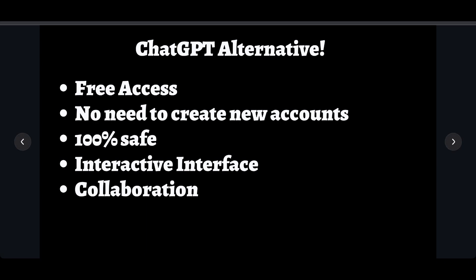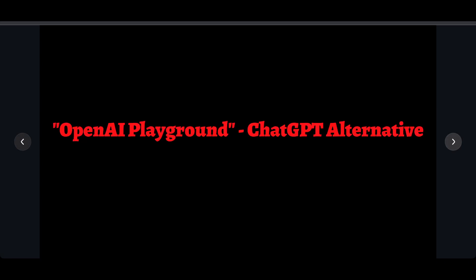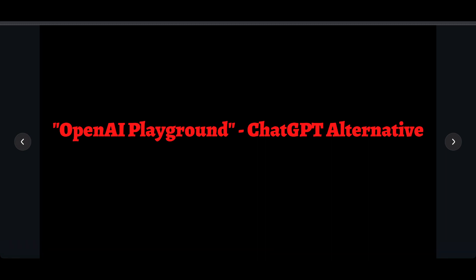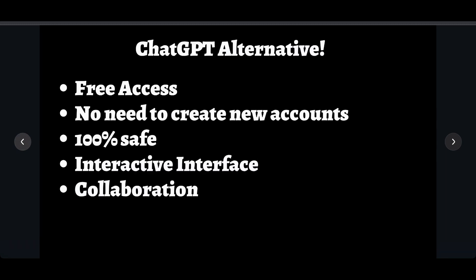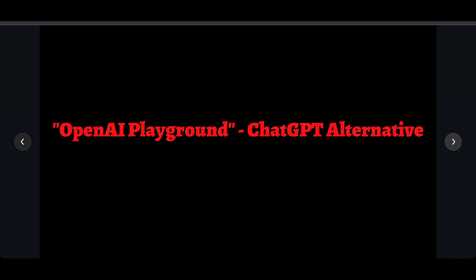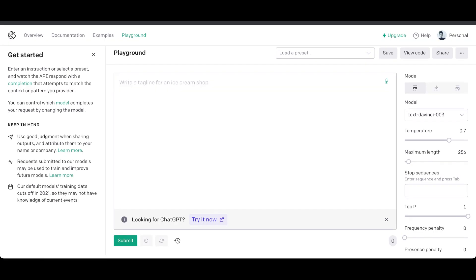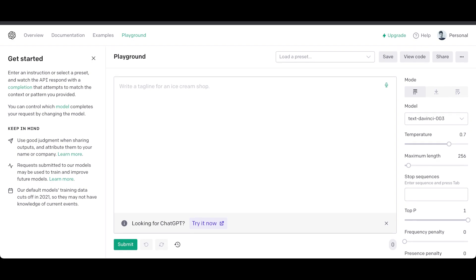Let me introduce the ChatGPT alternative — it's called the OpenAI Playground. To access it, go to this website: platform.openai.com/playground. When you go to that address you'll see a window similar to what I'm showing here, where you can generate responses.